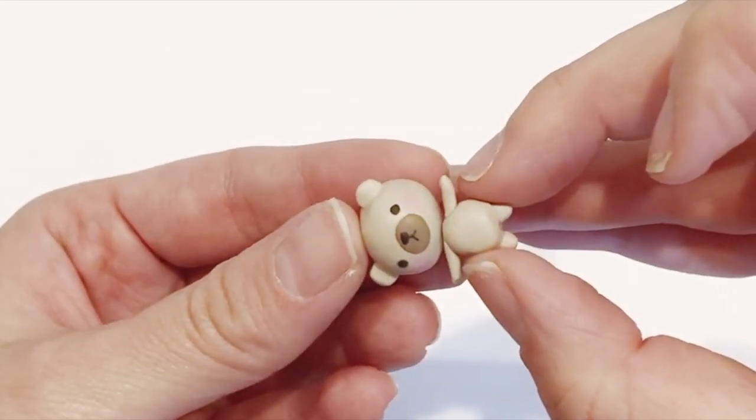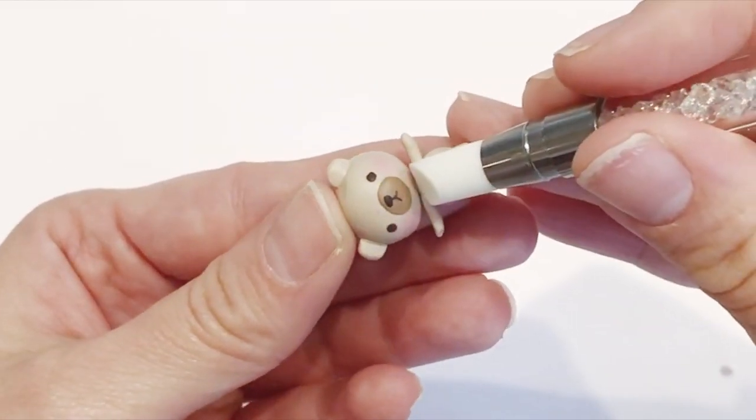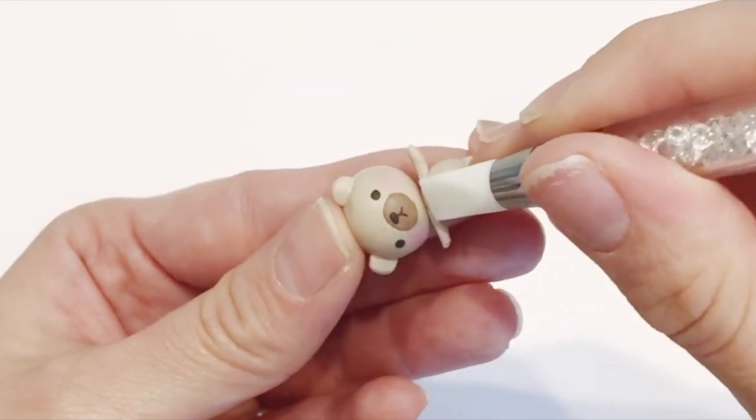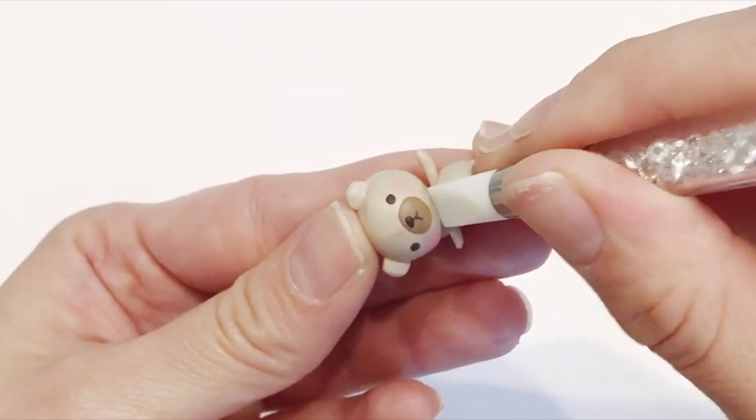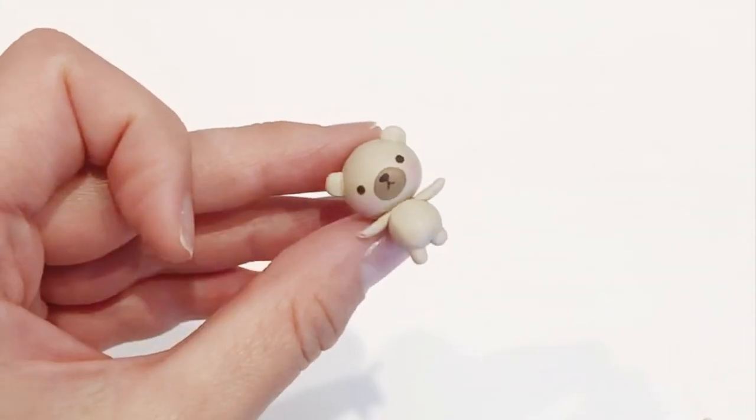To finish the bear, all you have to do is tack on the body to the head. I would just be very gentle. If you're having difficulty sticking the two, you can put a metal piece in between to hold the two pieces together. But for me, I just used a tool here to just blend the two pieces together. So that's how I made the bear.